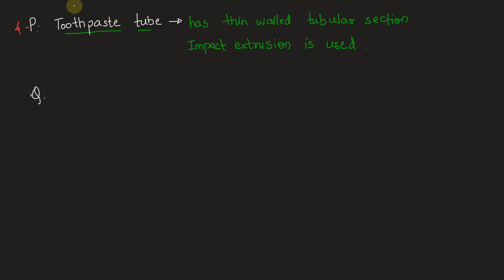Next one we have Q, which is metallic pipes. Unlike toothpaste tubes, metallic pipes have thicker sections but are hollow from within.